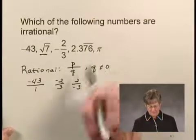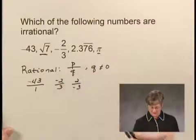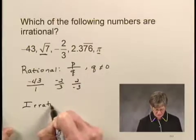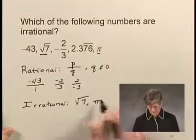The number pi cannot be expressed as a quotient of integers with a non-zero denominator, so pi is also an irrational number. So let's just answer the question. The irrational numbers are the square root of 7 and pi.